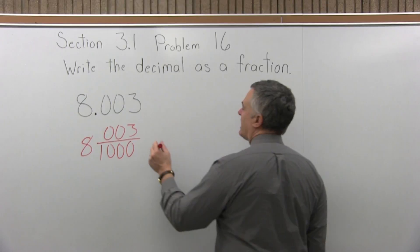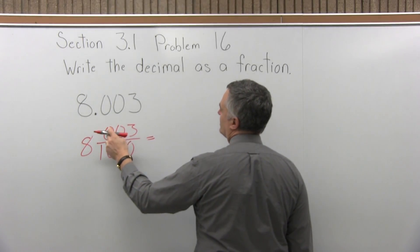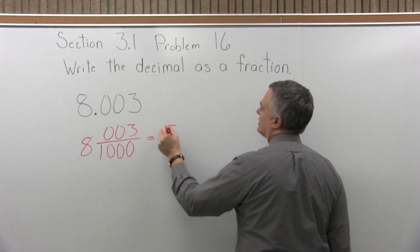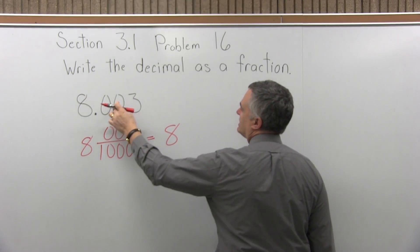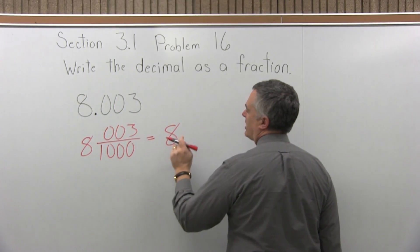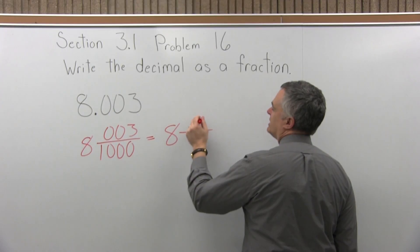Now in this case, I can't really reduce it. I really don't want to write those 0s in front of the 3 in the numerator. I put them in initially, so I know how many 0s to put in the denominator. But I'll at least do this.